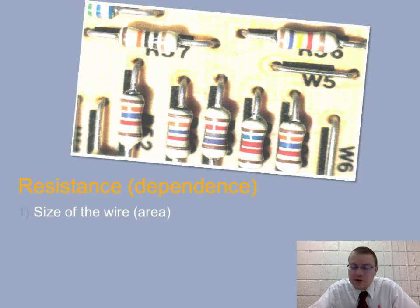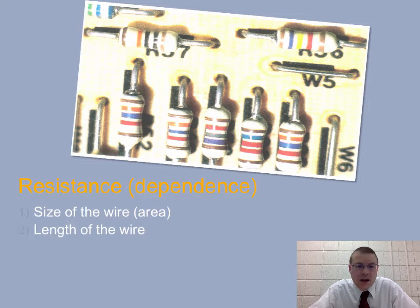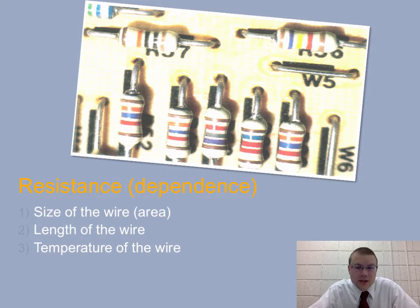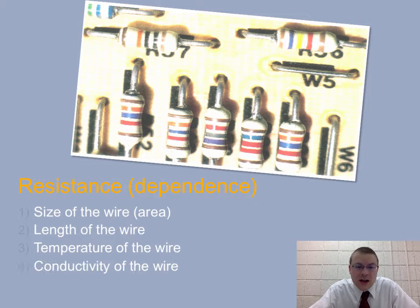How big the wire is, or the size of the wire. The length of the wire, so how long that wire is. The temperature of the wire does affect the resistance. And conductivity, meaning what the wire is actually made of, or what the resistor's actually made of. Those little color bands actually tell you the amount of ohms each of those resistors are. But if those were stripped of the colors there, it would still be the same resistor.